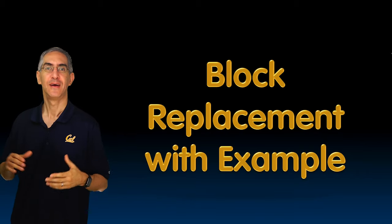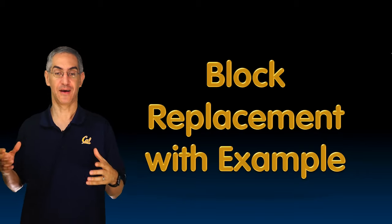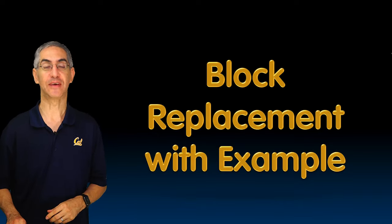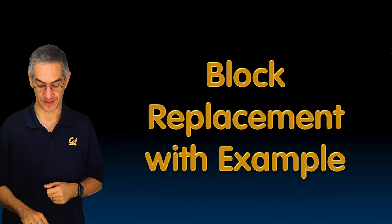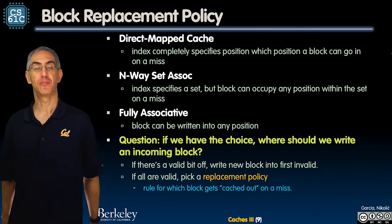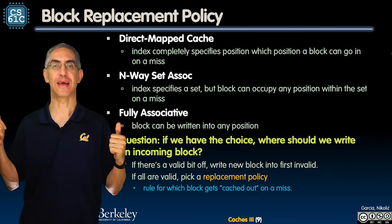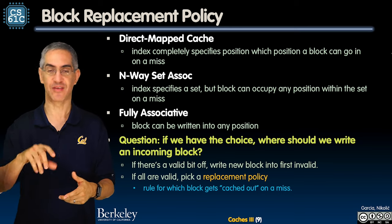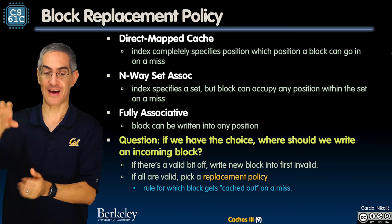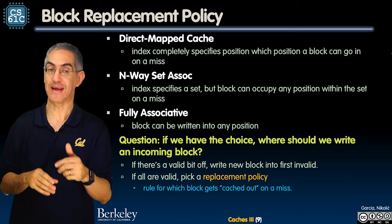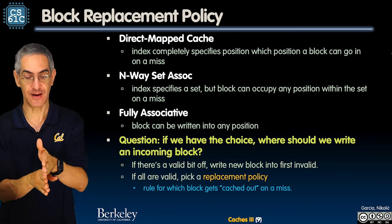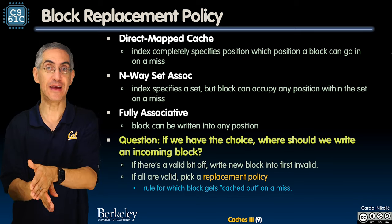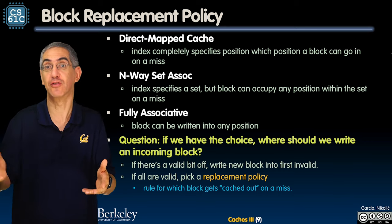Welcome back. Let's take a look at what block replacement might mean. So block replacement policy — what do we know about caches? We have a knob. If there are m total blocks in the cache and it's n-way set associative: when n is one, it's direct mapped; when n is m, it's fully associative; and when n is in the middle, like two, four, or eight, it's n-way set associative.